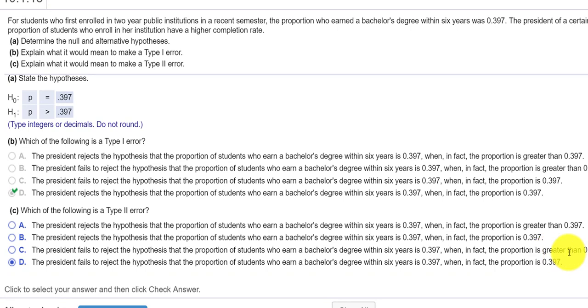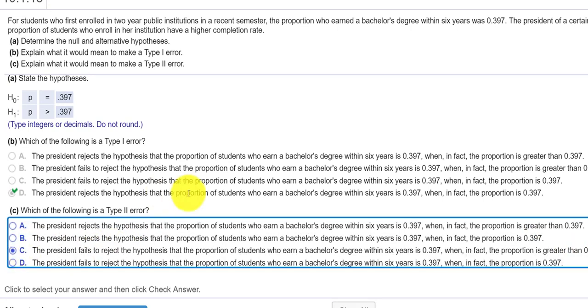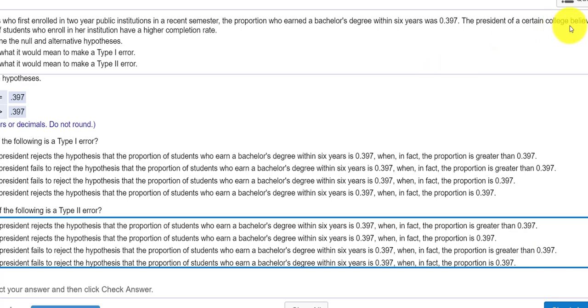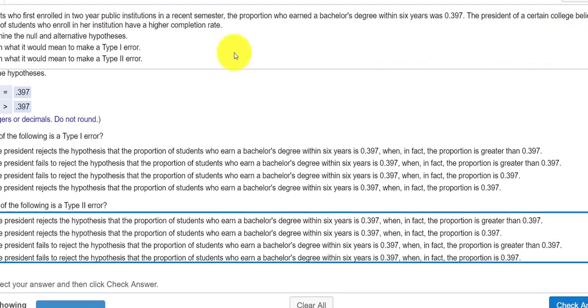Actually, it should be greater than 0.397. Sorry about that. Because the president of the college believes that the proportion of students who enroll in our institution have a higher completion rate. So we failed to reject this when indeed the proportion is greater than 0.397. Is greater, has a higher completion rate. Check our answer.